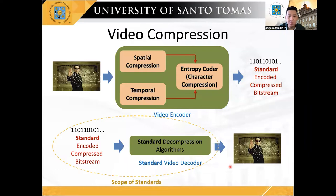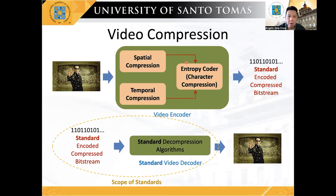Quantization or source distortion is directly affected by the degree of compressing the video information given the total available bit rate of the video encoder side. As shown, there are three compression components in a typical video encoder. Hence, the more compressed the video information, the lesser the quantization distortion will be.